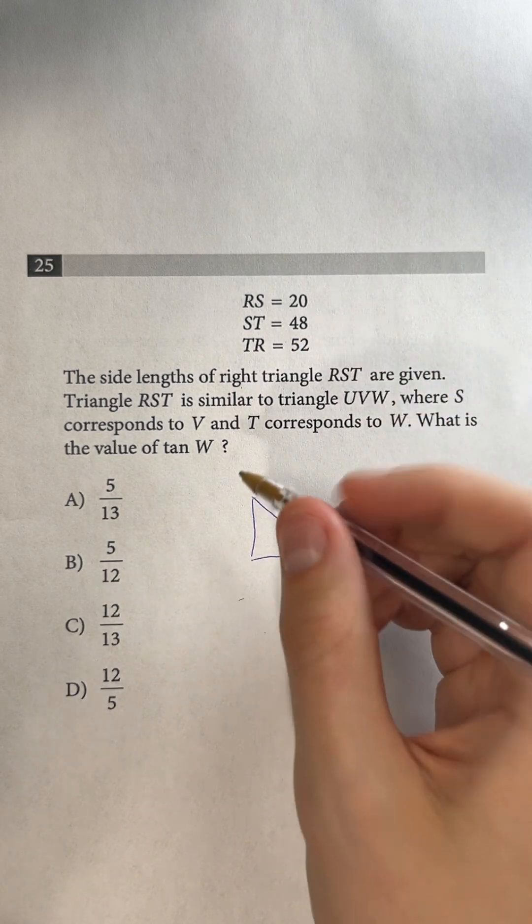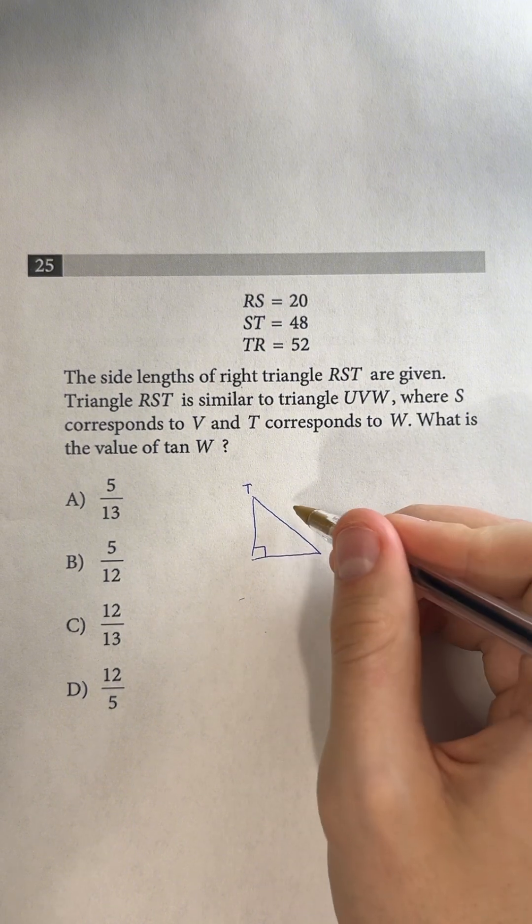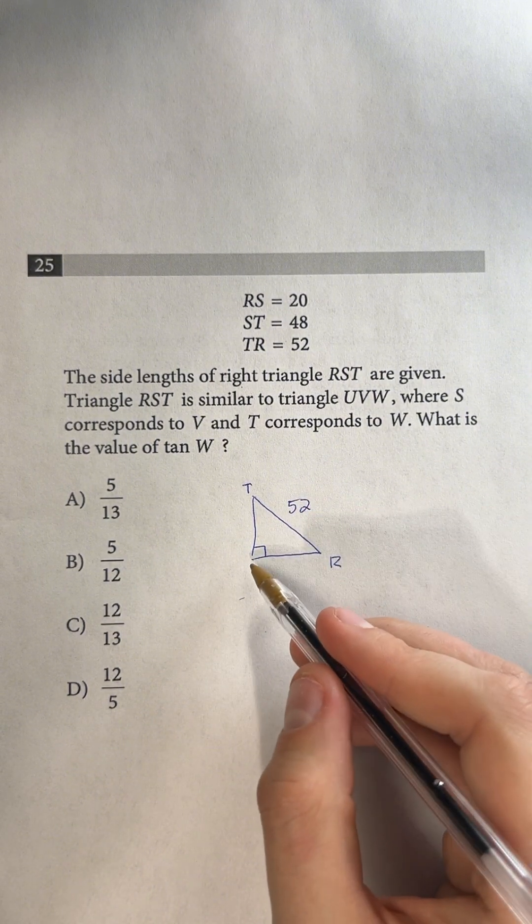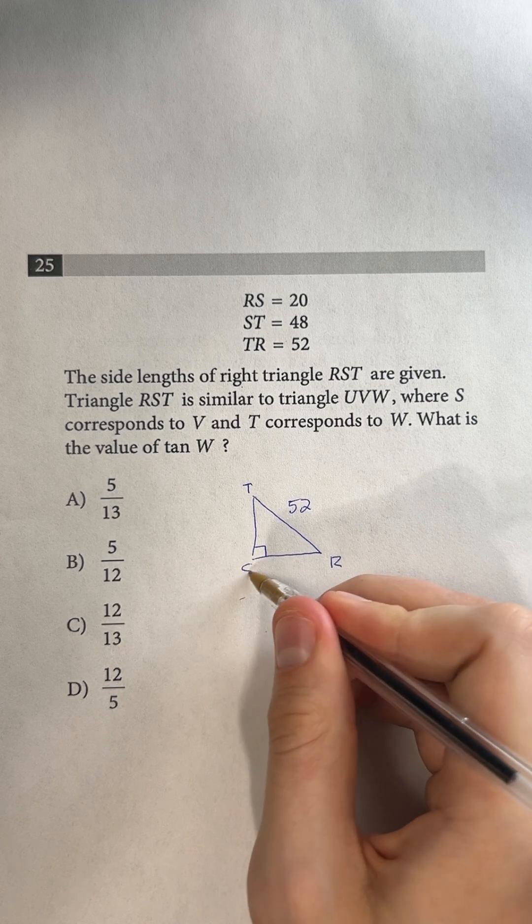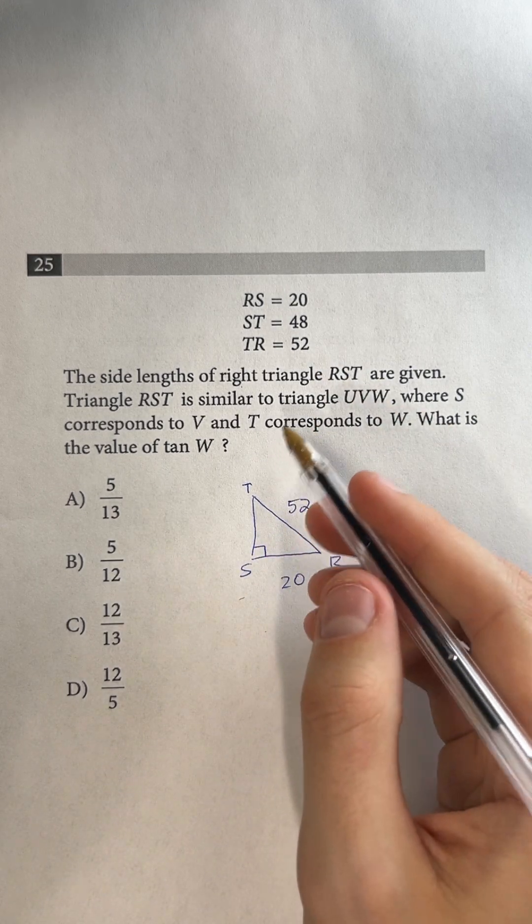So the hypotenuse is going to be TR because we know the hypotenuse is always the longest side. So this is 52, which means that this missing point must be S. And so RS is 20, and then ST is 48.